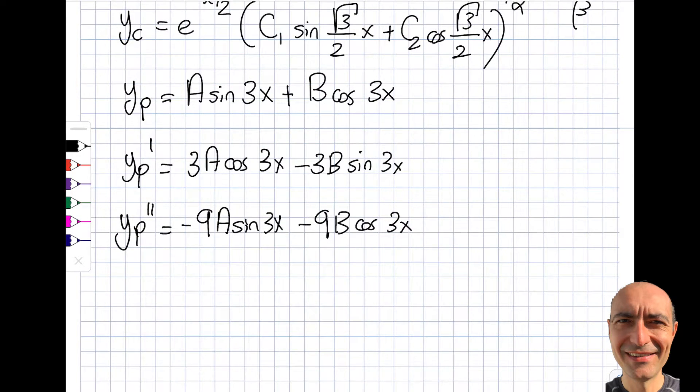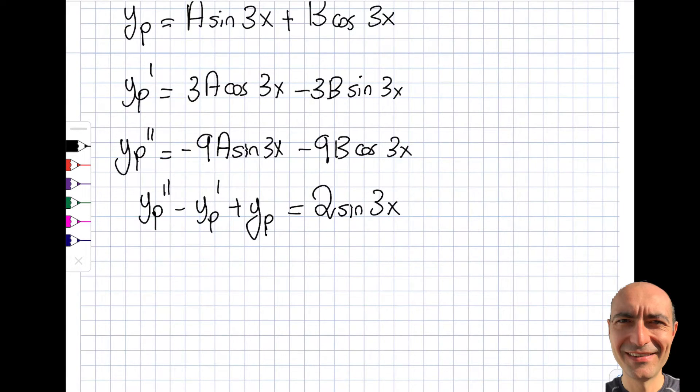So let me actually go ahead and rewrite this. So I'm now interested in yp double prime minus yp prime plus yp will be equal to 2 times sine of 3x. So if I go out with double prime,